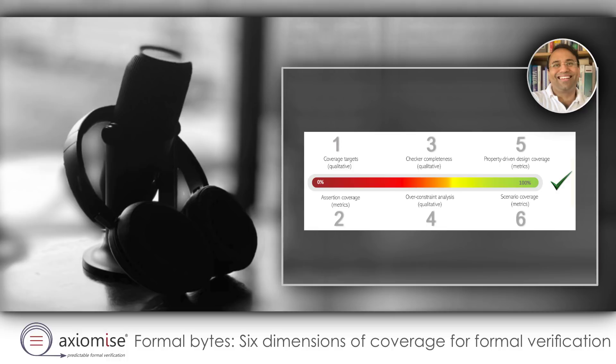Number two is assertion coverage, which is simply an insight into a dashboard view from any formal tool. You look at it — usually from a log file — to say what was proven, what failed, and what was inconclusive. By fail, I mean those assertions which also failed the vacuity check. That is the easy bit. The hard bit comes in when you want to understand whether the collection of properties that were formalized were enough to check a specific requirement.